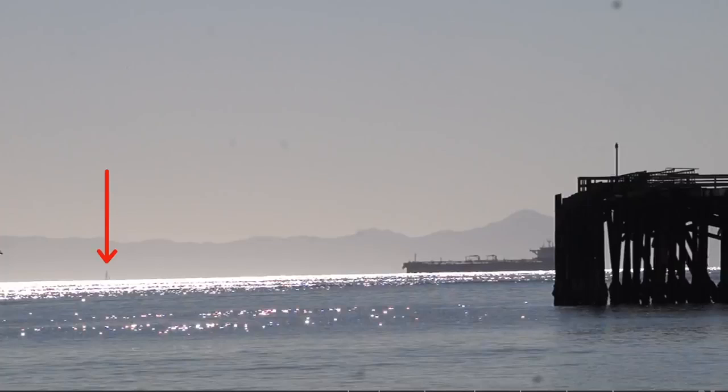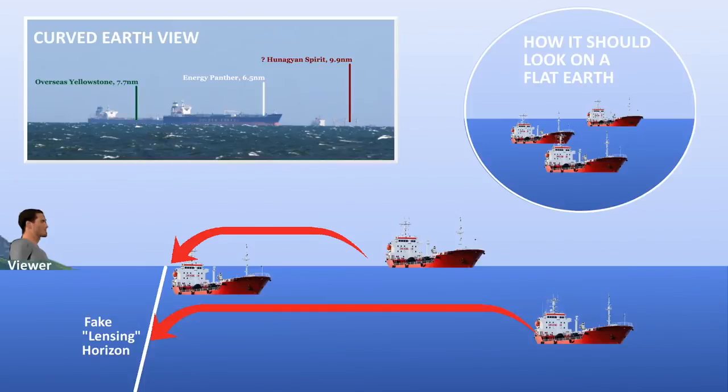This one panorama ends the Skiba lensing claim once and for all. They are trying to invent some magical lensing effect, which can bend all the light from different sources at different distances, right at the same line. This simply cannot work. Light does not do that. There is no form of refraction that can cause that. The shared horizon line must be caused by the curvature of the Earth.